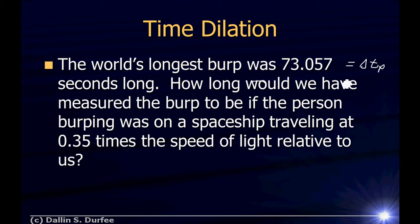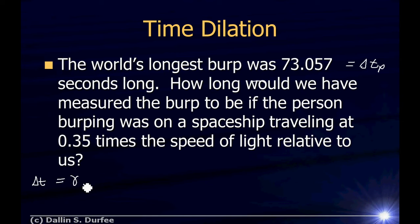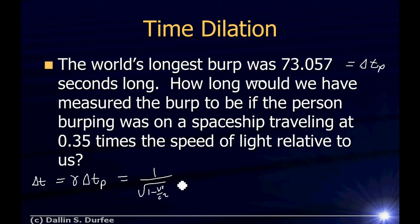If we are on the Earth watching the spaceship fly by, we are going to measure a time-dilated time for the time between those two events — the burping starting and the burping ending. The time dilation equation is delta T equals gamma times delta T proper, where gamma is 1 over the square root of 1 minus v squared over c squared.